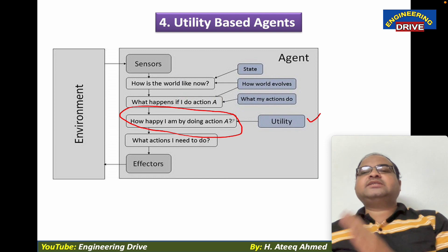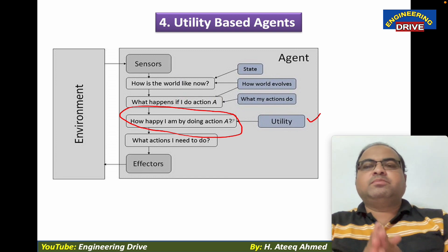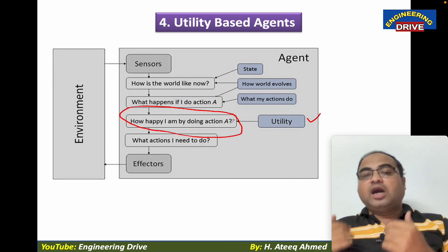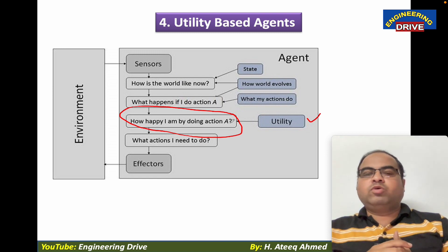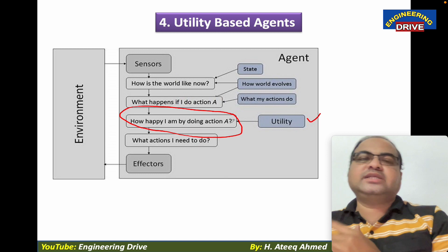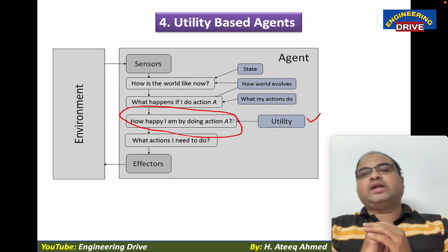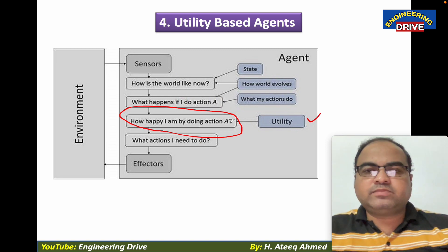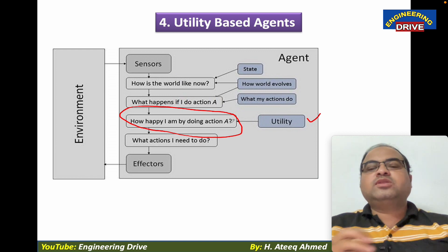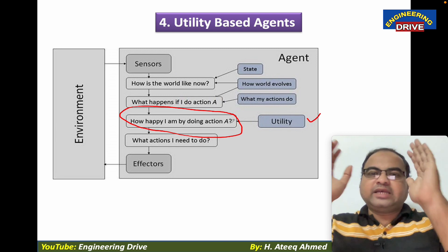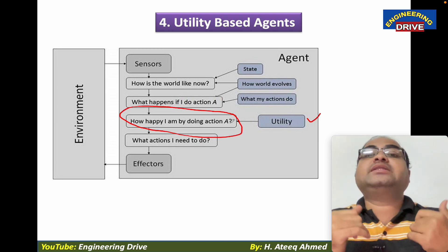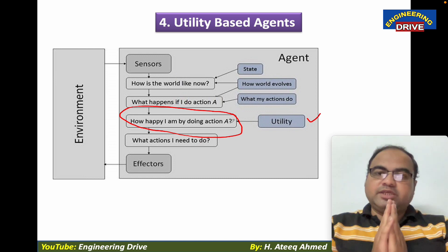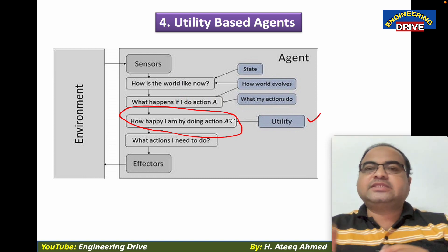In the first case, parents convince their son that civil engineering has a good future and their goal is for him to become a civil engineer. The student listens to his parents and sets a goal to become a civil engineer, but that interest and enthusiasm is not there. With his parents' force and point of view, he selected civil engineering. There is a 50-50 percent chance that he may or may not become a civil engineer. This is an example of a goal-based agent.